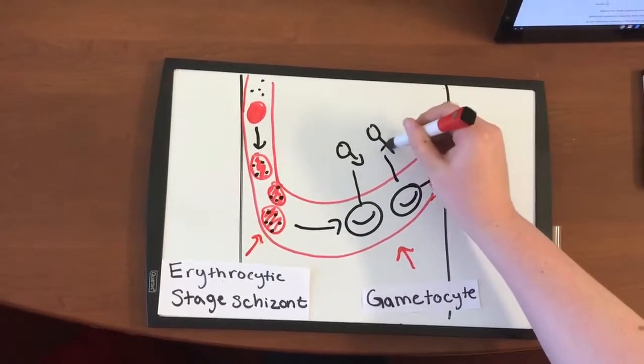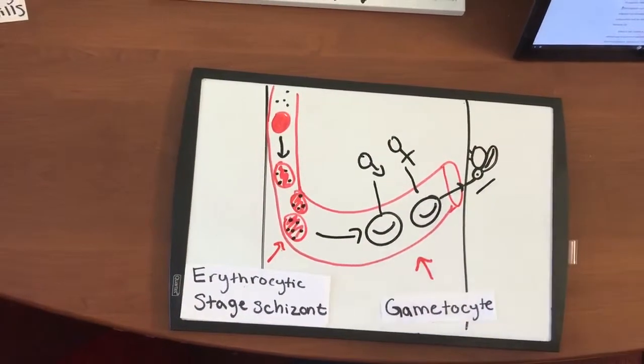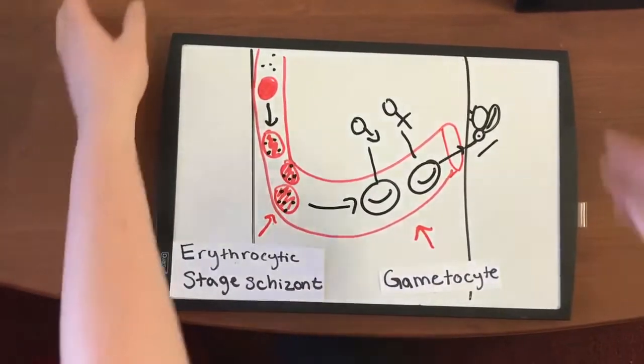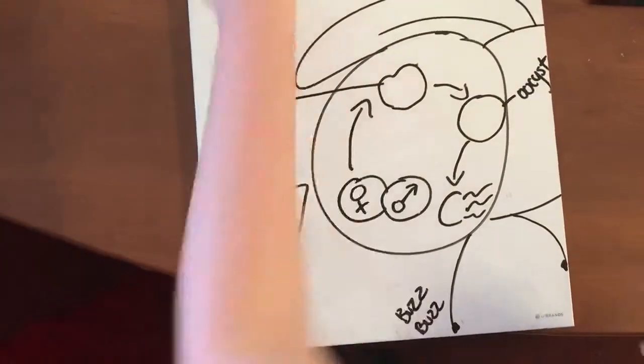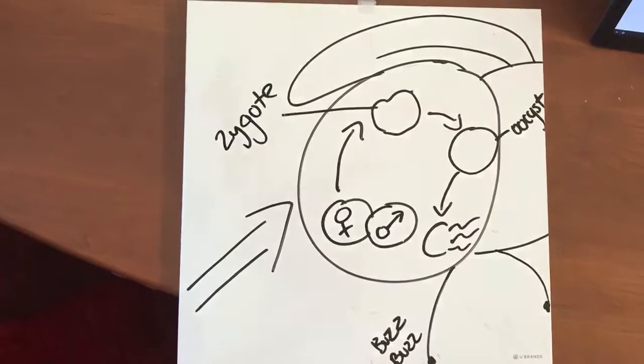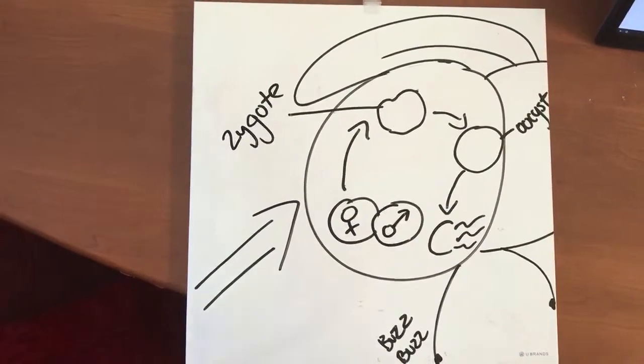When an uninfected mosquito bites a person with malaria, the infectious gametocytes enter the mosquito and the sexual stage of Plasmodium occurs within the mosquito. The male and female gametes combine to form a zygote.